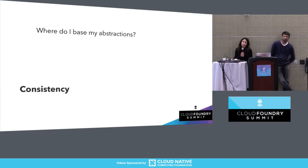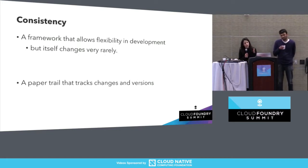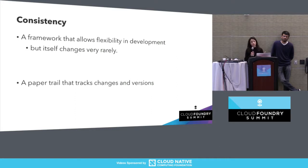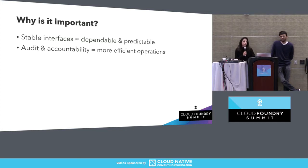The third question is: where do I base my abstractions? Consistency is about a framework keeping an interesting balance — on one side, not changing very frequently so you can depend on it having a specific behavior; on the other side, being flexible and granular enough so you have complete control over the specification of how your software should be built and run. Consistency is also about offering a paper trail that tracks changes and versions, so different parts of your framework know information about your code and how it is deployed.